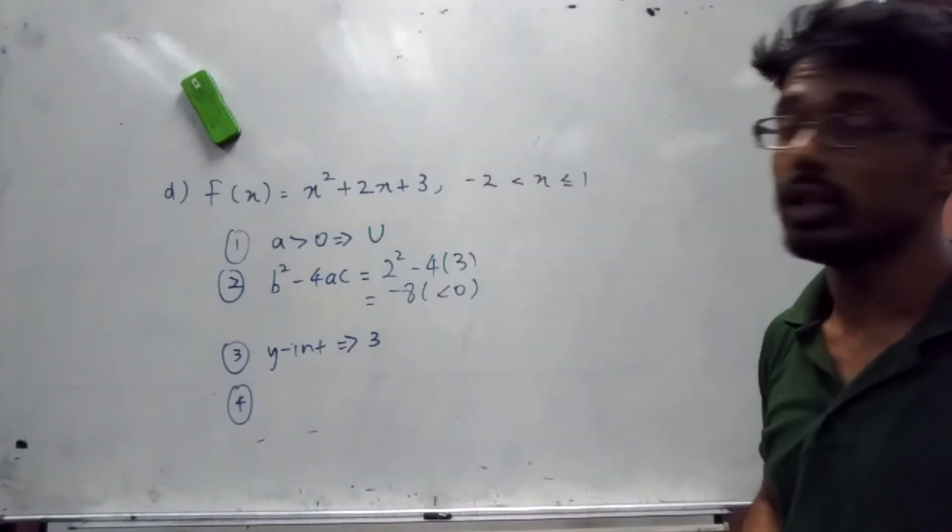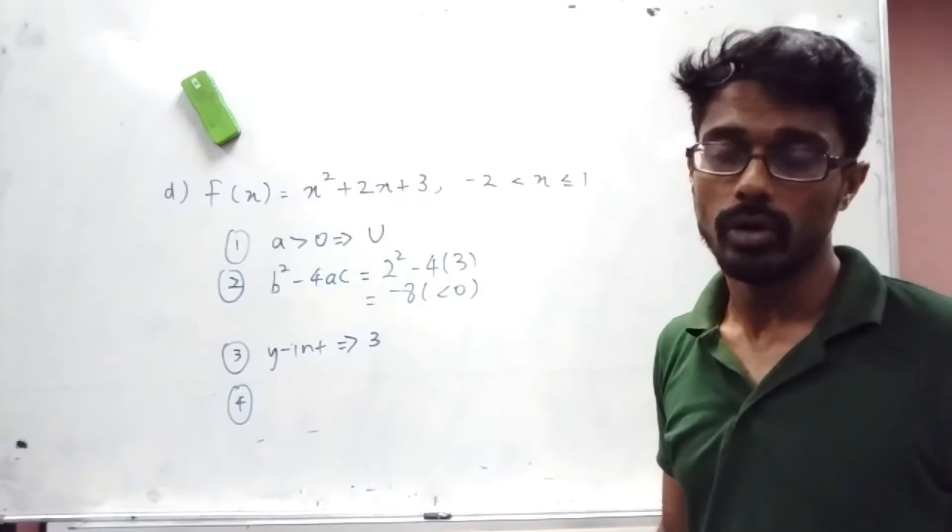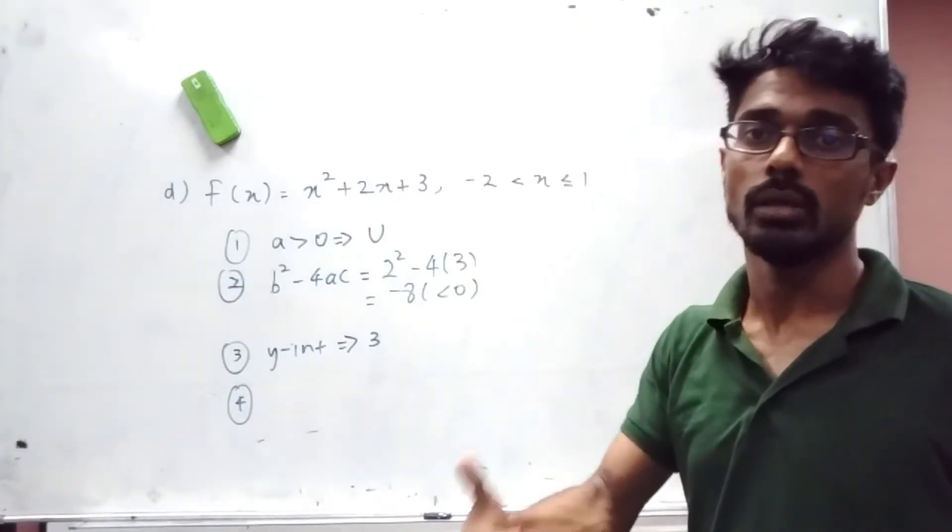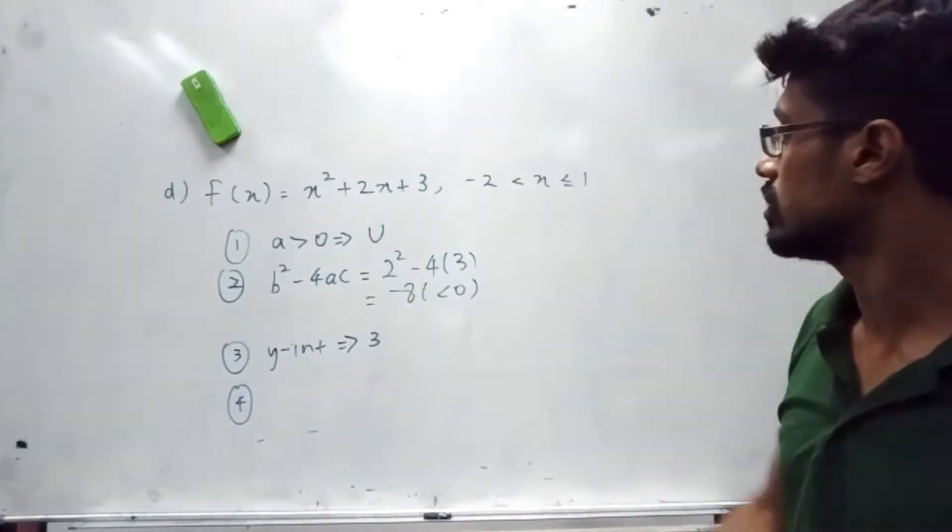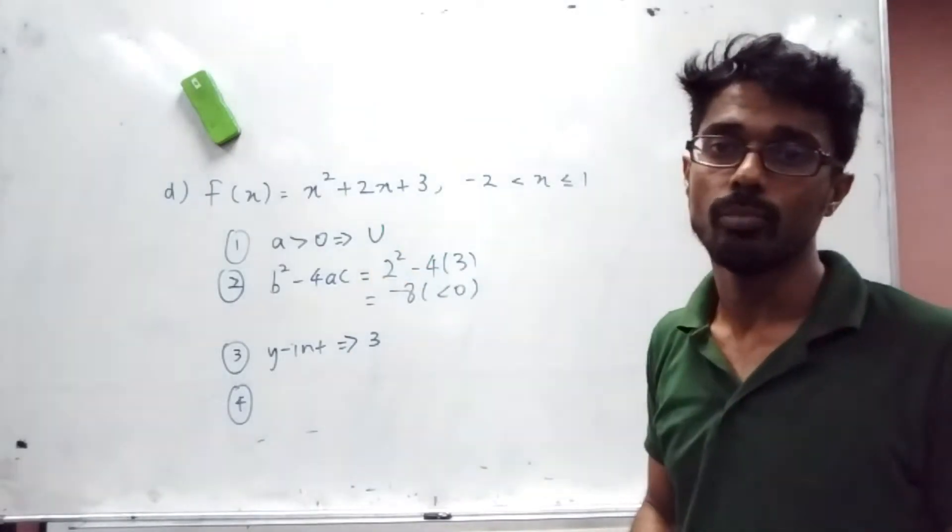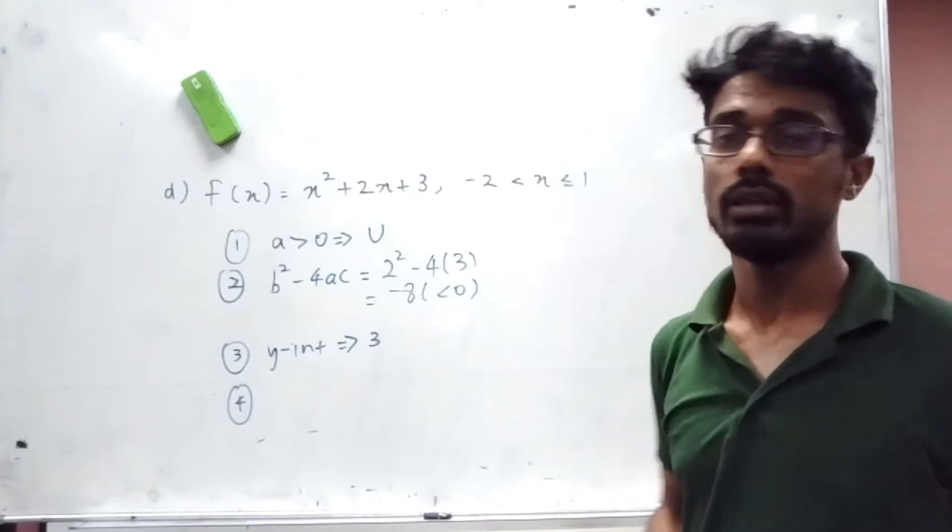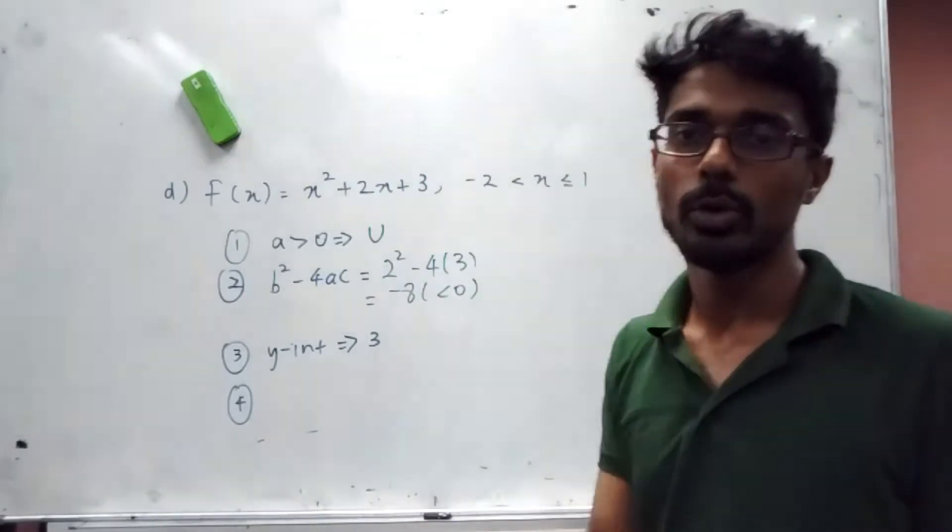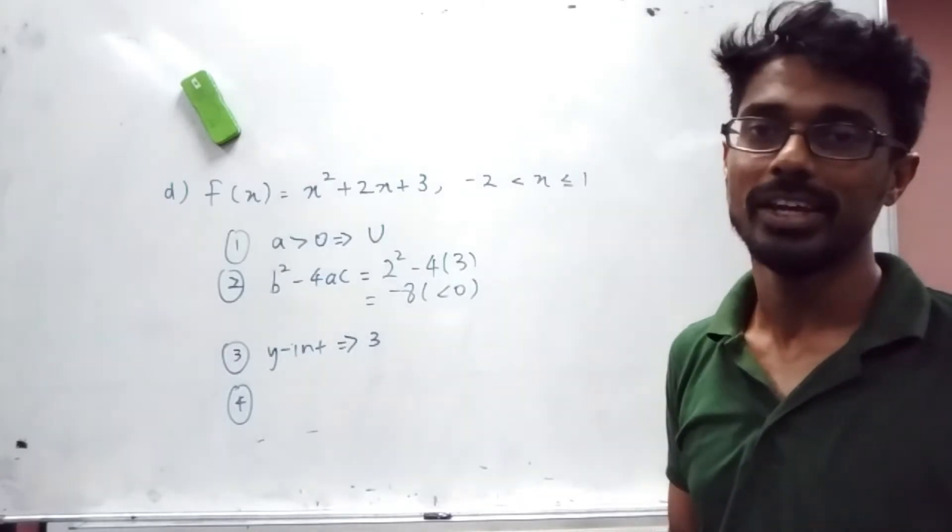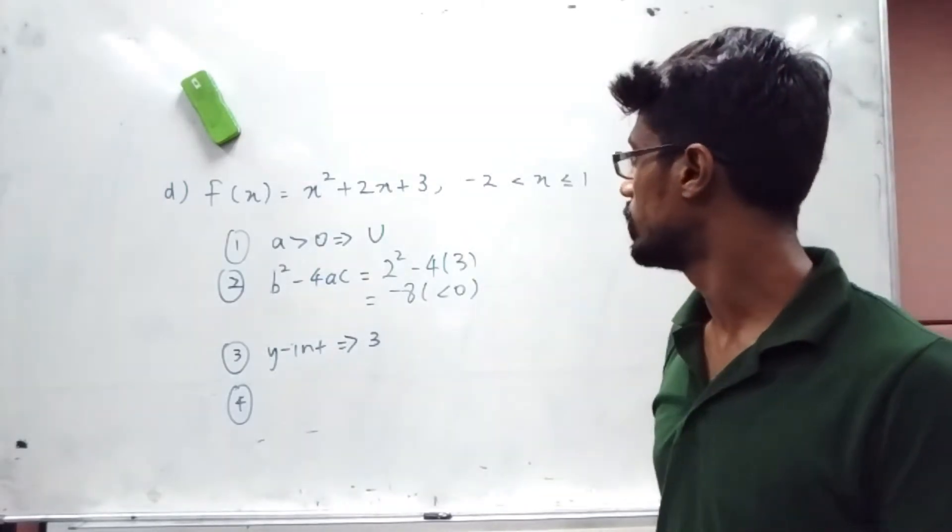Number four, it'll be good if we find what is our extremum point. Extremum point in our case is either minimum or maximum. Here, since this is a happy graph, we're going to have a minimum point. How do we find minimum point? By completing the square. I know many of you don't like completing the square, but there's no other way.